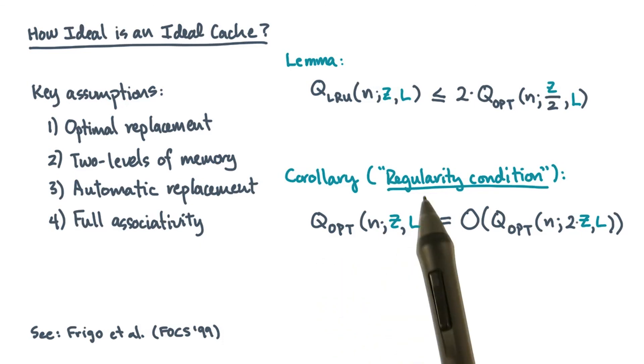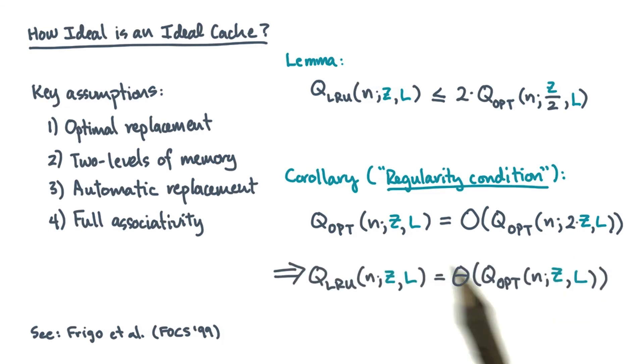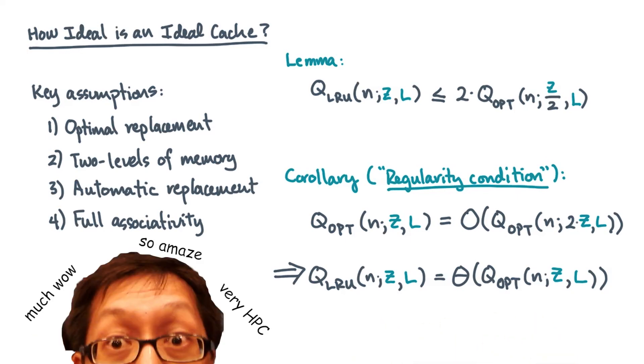What you calculate for Q_OPT is regular if Q_OPT is big O of Q_OPT with twice the cache. So if you can show that Q_OPT is regular in this sense, then Q_LRU will be proportional to Q_OPT with twice the cache.